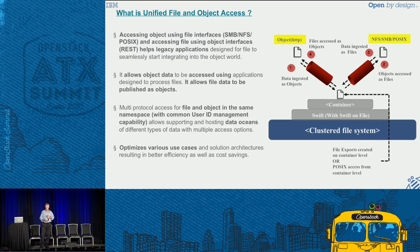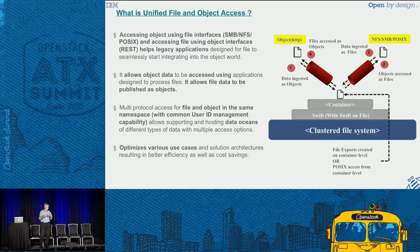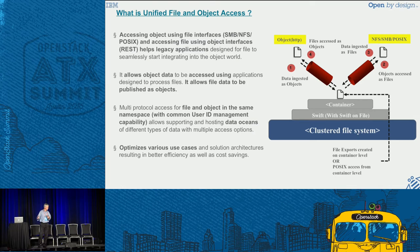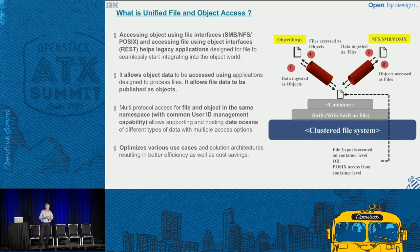Processing is done and then the object can be written back to the file system and made available to the object interface. If you look at the stack on the right-hand side, at the bottom level we've got a clustered file system — this can be Spectrum Scale, it can be Gluster, it can be any clustered file system. That provides uniform access across all your proxy nodes. On top of that is the Swift software, in particular the Swift on file disk file, and then on top of that is the organization within Swift containers. The key points are: accessing objects from either interface, allowing data to be published as files and then consumed as objects, maintaining ownership for multi-protocol access, and the optimization of not having to move data, which enables a number of interesting use cases.